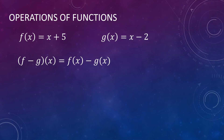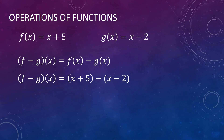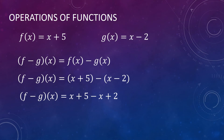Let us now proceed with the subtraction of functions. f minus g of x is the same as f of x minus g of x. So first, we write the first function f of x, which is x plus 5, minus g of x, which is x minus 2. In this operation, the subtraction is distributed to the two terms of our g of x. So this becomes x plus 5 minus x plus 2. The negative sign is distributed to x and negative 2, making them negative x plus 2. Simplifying, our f minus g of x is equal to 7.